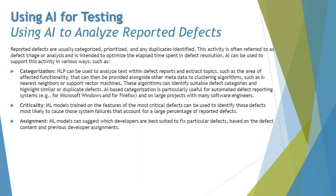Reported defects are usually categorized, prioritized, and any duplicates are identified. This activity is often referred to as defect triage or analysis, and is intended to optimize the elapsed time spent in defect resolution — in simple terms, the turnaround time between defect reporting and defect resolution. AI can be used to support this activity in various ways.